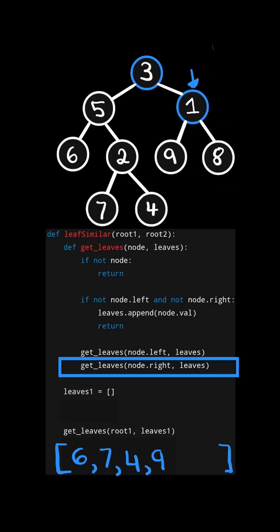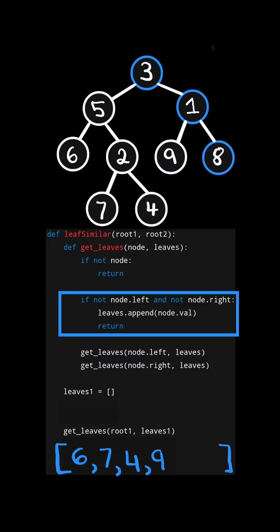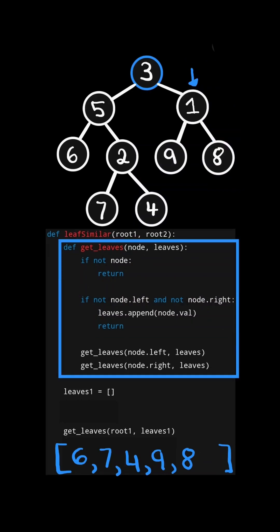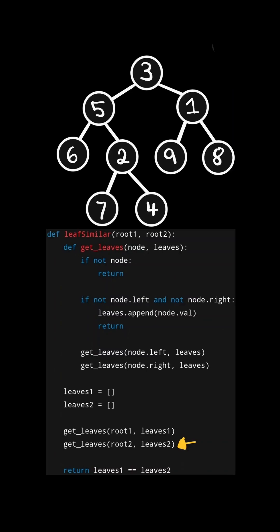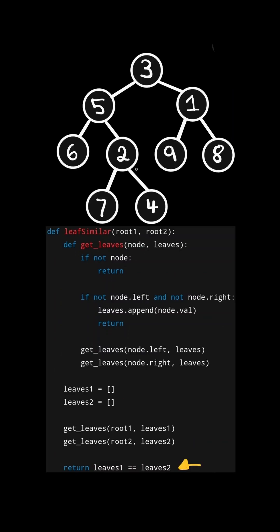We move up the stack to the previous call and recurse on its right node. The node is a leaf node, so we append it to the list and simply return. We go back up through the remaining calls and finish. At the very end, we have the leaf value sequence. We do the same process with the second tree to get its leaf value sequence, and then compare if the two lists are the same.